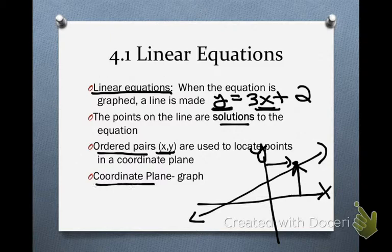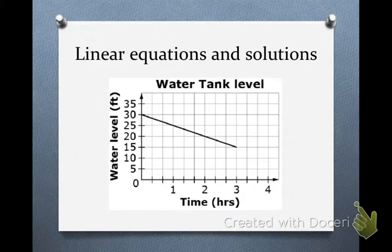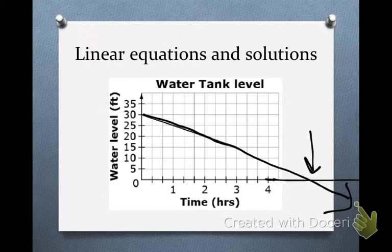A fancy way of saying a graph is just calling it a coordinate plane. When would we ever use this? You don't need to write this down. This is just kind of an example. See, you have a water tank, and you have a hole in that water tank, and you want to predict when your water tank will be empty. You can make a straight line, and you can actually predict when your water tank would be empty.